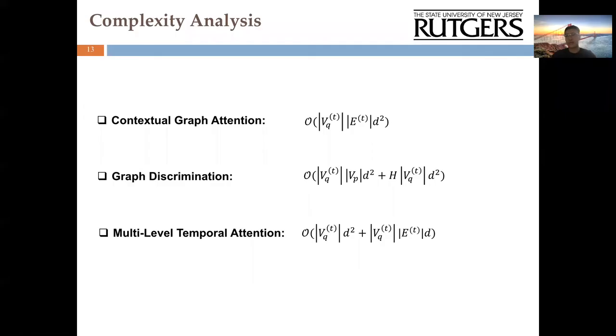Regarding the model complexity, we claim that the incremental graph representation learning module is computationally efficient from three aspects. First, contextual attention only considers the situational information from macro and micro graphs in the most recent period. Secondly, graph autoencoder simply produces the latest common structure and distinctive structure adjacency matrix without periodic retraining. And thirdly, the multi-level temporal attention further computes the latest temporal adjacency matrix without considering the far past history.